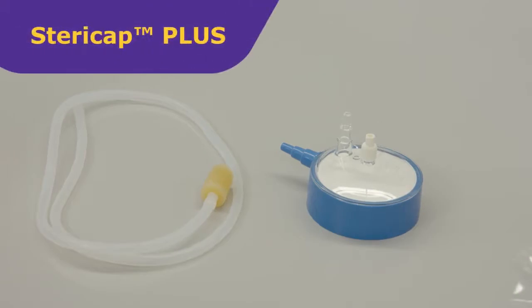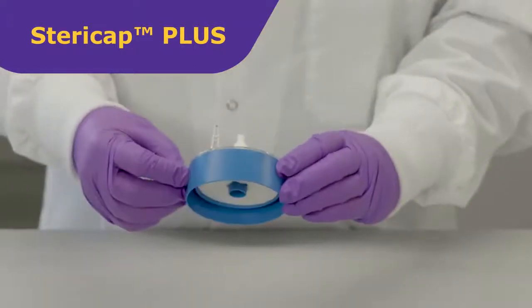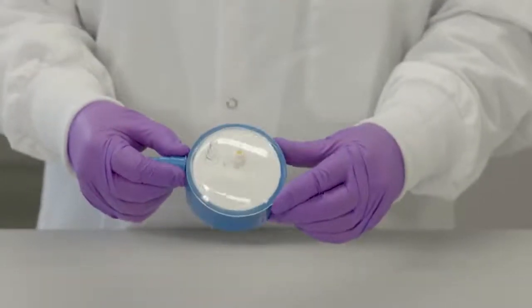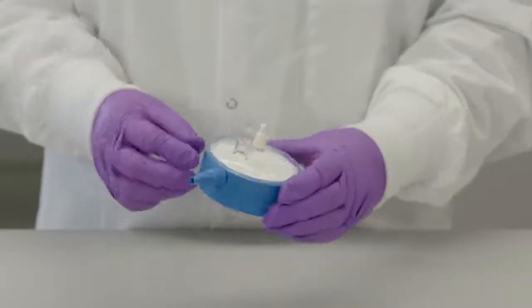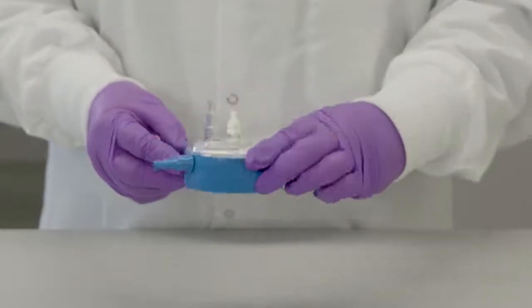SteriCap Plus filter units for 5 to 10 liters with Express Plus PES membrane bottle top filter system can be used to filter vacuum rated bottles and other containers with inner neck diameters from 20 to 67 millimeters.